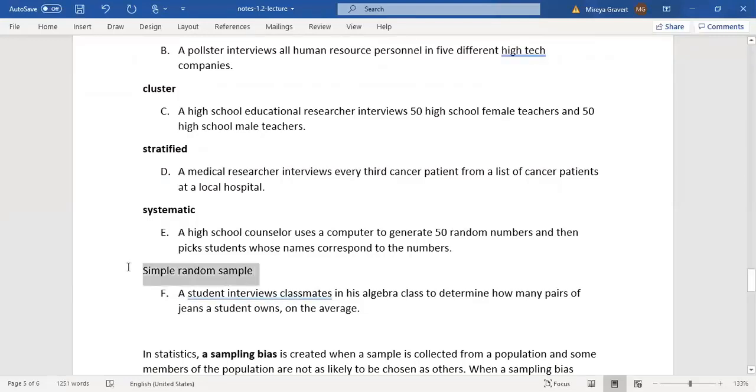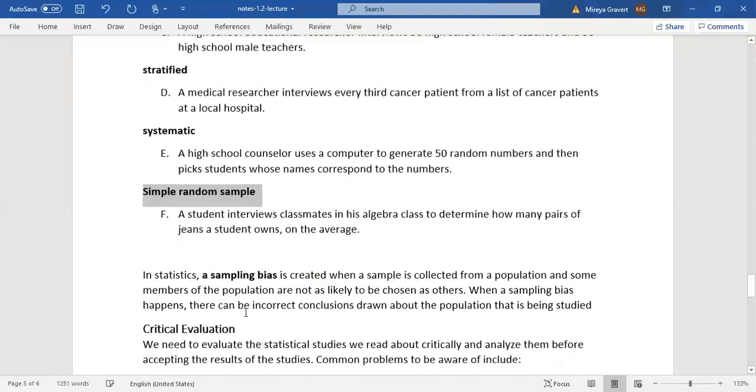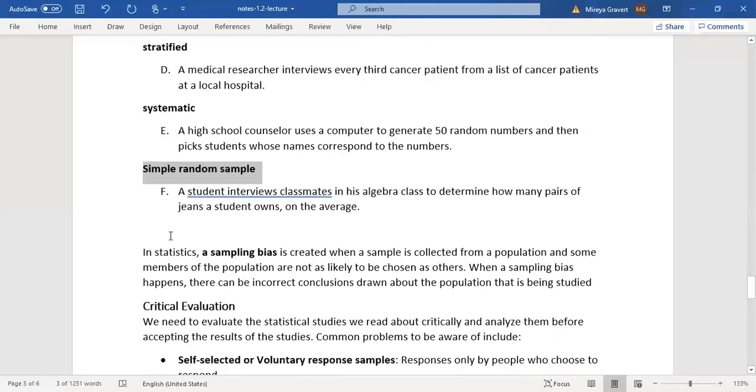F: The last one - a student interviews classmates in an algebra class to determine how many pairs of jeans a student owns on average. The population are students, and this student interviewed his classmates, so this is an example of convenience sampling.